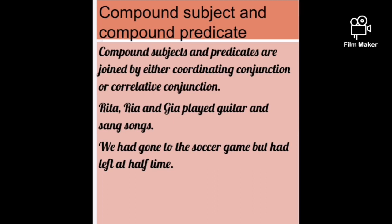'We had gone to the soccer game but had left at half time' — the subject is one: we. But the predicates are two: going to the soccer game and leaving at half time — so this has a single subject with a compound predicate. Some sentences may have a simple subject with a compound predicate, some a compound subject with a single predicate, and some may have both compound subject and compound predicate.